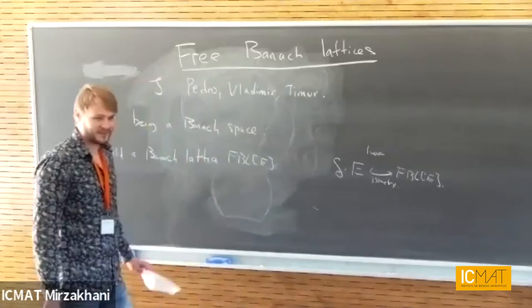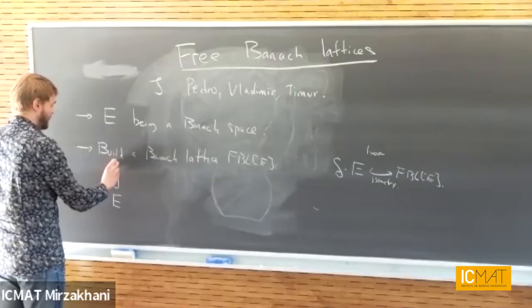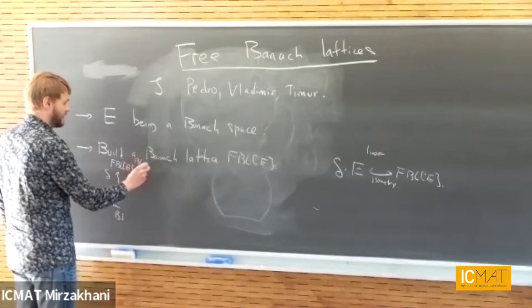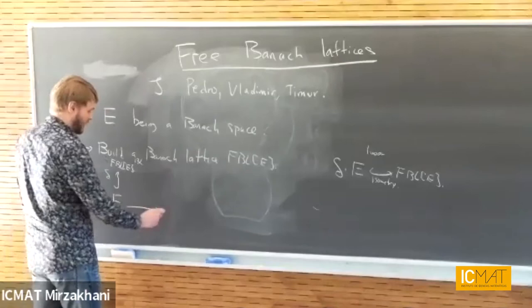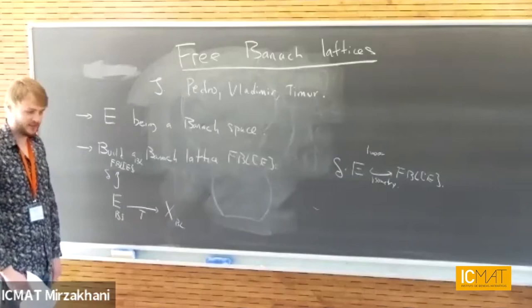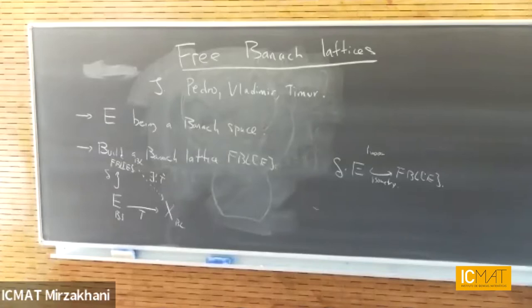How does that turn into a picture? You start with E together with your map delta into the free space — FBL(E) is a Banach lattice. We encode that this is free using the same kind of diagram as a free group or anything in algebra: for any Banach lattice X and any bounded linear operator T from E to X, we can extend it uniquely to a map T-hat, which is now a lattice homomorphism.